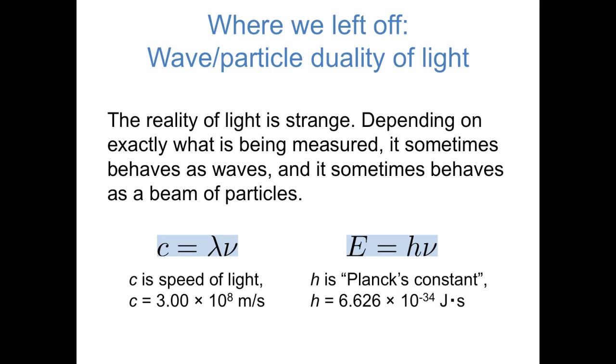First, I'd like to remind us of where we left off last time. In the previous video, we talked about the fact that the reality of light is very strange. Depending on what you're measuring, it can sometimes behave as waves with a wavelength and frequency that are measurable, and it can sometimes behave as a beam of particles. These two equations sum up where we left off: c equals lambda nu tells us the relationship between the wavelength and frequency of light, and the second equation, E equals h nu, tells us that the energy of a photon, of the smallest packet of light, is proportional to the frequency of the light.